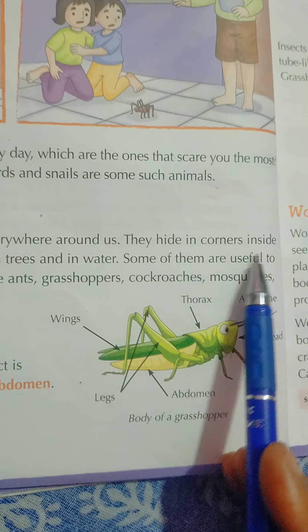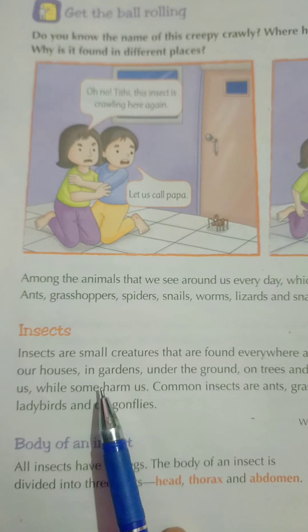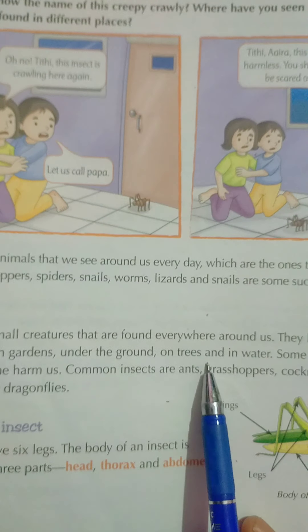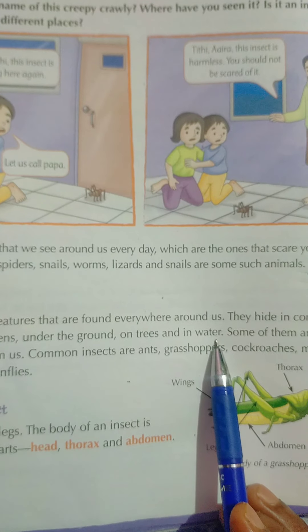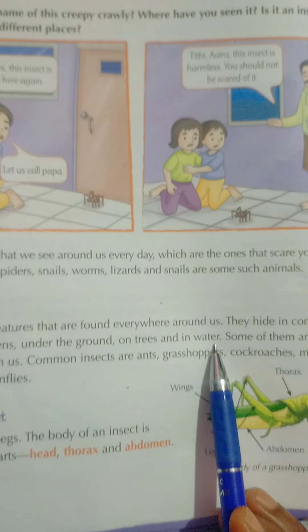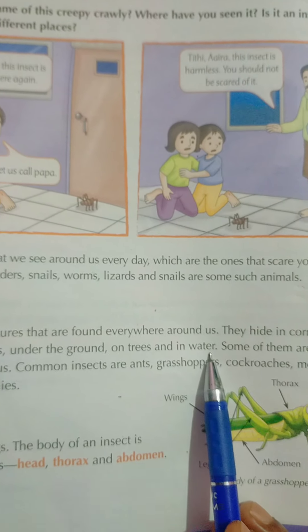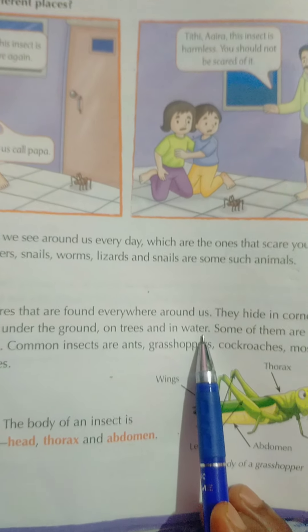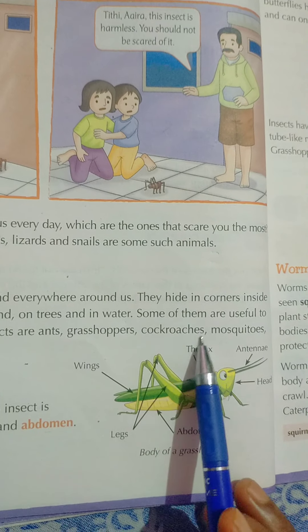They hide in corners inside our houses, in the garden, under the ground, on trees, and in water. वो छिपकर रहता हैं, अमारे घर के कोने में, बगीचे में, जमीन के नीचे, पेड़ पर, और पानी में।